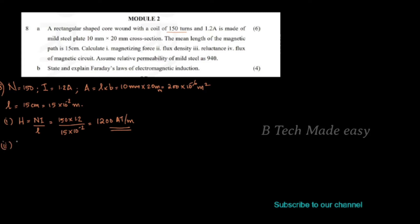The second quantity we have to find is the flux density B. Using the relation B equals mu0 times muR times H. We have muR equal to 940, mu0 equal to 4π into 10 raised to minus 7, and H equal to 1200 ampere-turns per meter. Solving the B equation gives us the answer.